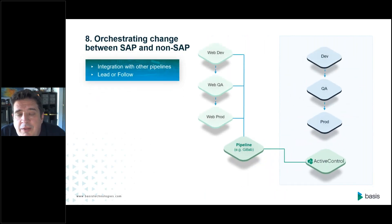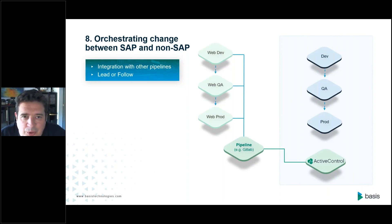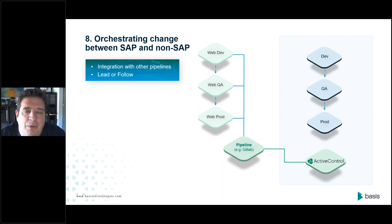One of the final scenarios is orchestration of change between the SAP and non-SAP ecosystems. When you have a change being deployed in your web presence that needs to be coordinated with a back-end change, you need to look at integration between pipelines — in the case of tools like GitLab or Azure DevOps — where you want to model a dependency. It could be that the SAP change needs to go first, or the other way around, or they need to be coordinated and deployed simultaneously.